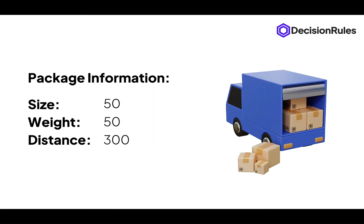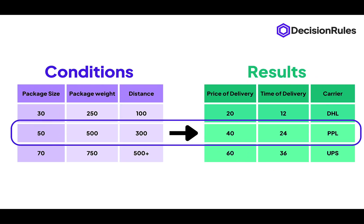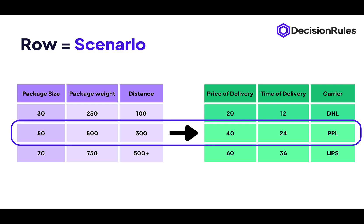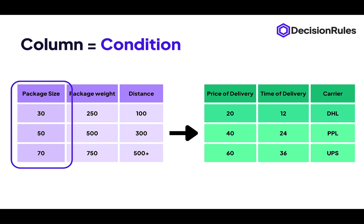Let's say that for an example, we have a package with the following information. Its size is 50 cubic centimeters, its weight is 50 grams and the distance that it's going to travel is 300 kilometers. This case falls exactly in our middle row where you see that the information matches exactly our conditions, and the result is 40 dollars for the price of delivery and the package will be delivered in 24 hours by the PPL. To slightly sum it up, every row in a Decision Table represents a certain scenario — the combination of conditions that has to occur and what will be their result — and every column represents a condition or result tied with a certain information. I will later on call them variables, for example here with the size of a package.